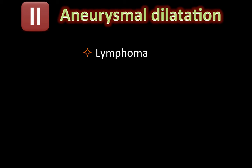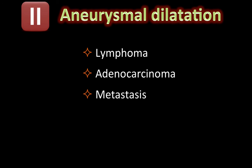So what is your differential diagnosis for an aneurysmally dilated bowel loop? The differential diagnosis classically starts with lymphoma. Other entities that could give such a finding would be adenocarcinoma, metastases classically from melanoma, gastrointestinal stromal tumors, and sarcoma.